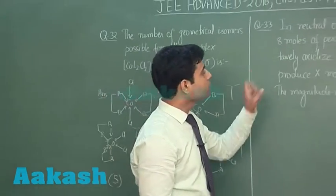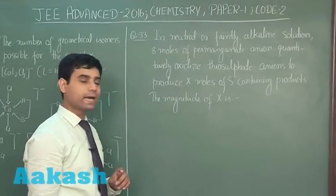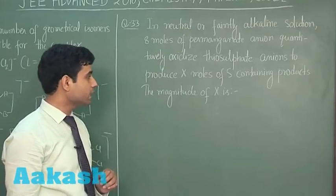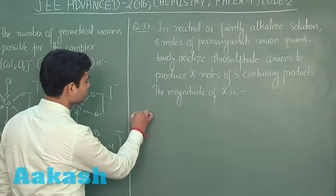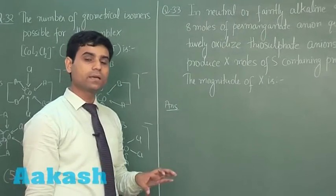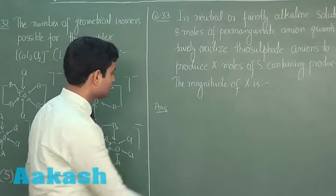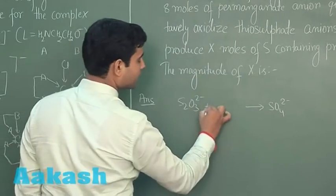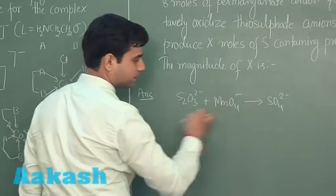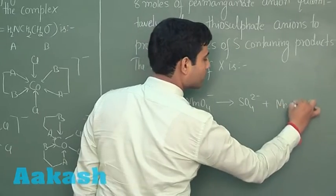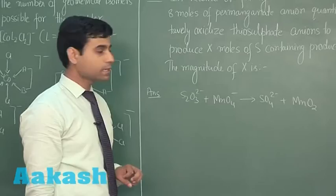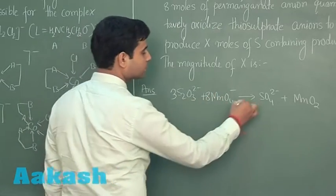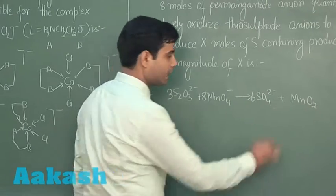Moving to the next question: in neutral or faintly alkaline solution, 8 moles of permanganate ion quantitatively oxidize thiosulphate anions to produce x moles of sulfur-containing products. In alkaline medium, thiosulphate on oxidation gives sulfate. So S₂O₃²⁻ gives SO₄²⁻ when reacted with MnO₄⁻, which reduces to MnO₂. Balancing the reaction gives 3 moles of S₂O₃²⁻ and 8 moles of permanganate ions, producing 6 moles of sulfate ion and 8 moles of MnO₂.